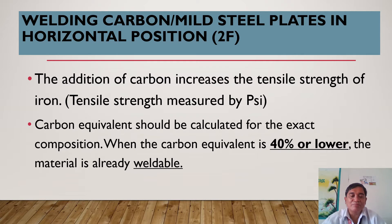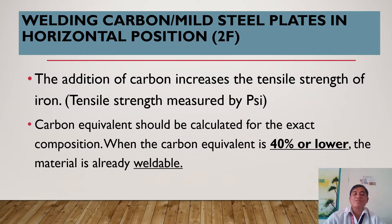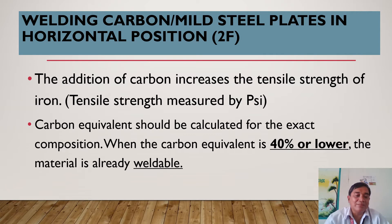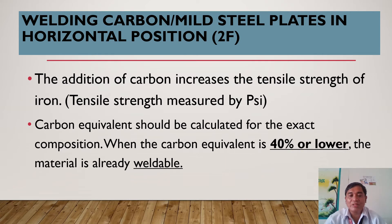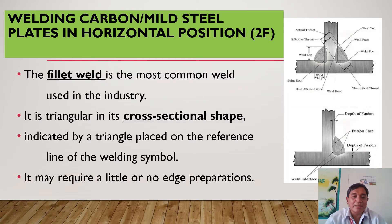The addition of carbon increases the tensile strength of the iron — that is the role of carbon. The tensile strength is measured by PSI, which stands for pounds per square inch — the hardness of the metal or steel. The carbon equivalent should be calculated for the exact composition. When the carbon equivalent is 40% or lower, the material is already weldable. Therefore, not all materials can be welded — only materials with a carbon equivalent lower than 40%.